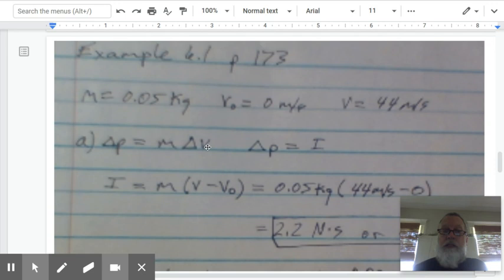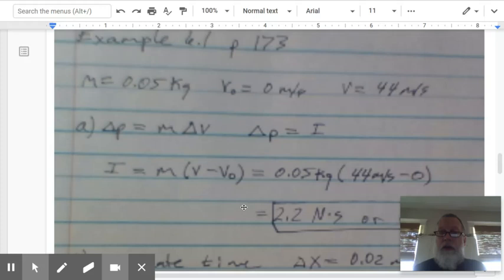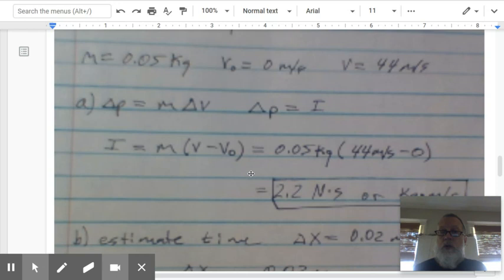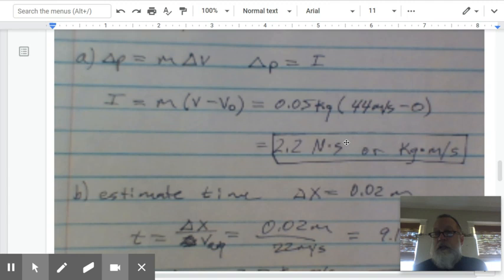Change in momentum equals mass times change in velocity. Change in momentum also equals impulse. So impulse equals mass times change in velocity. So we have mass 0.05 times 44 minus 0, and that gives us 2.2 newton seconds, which is technically the units for impulse.